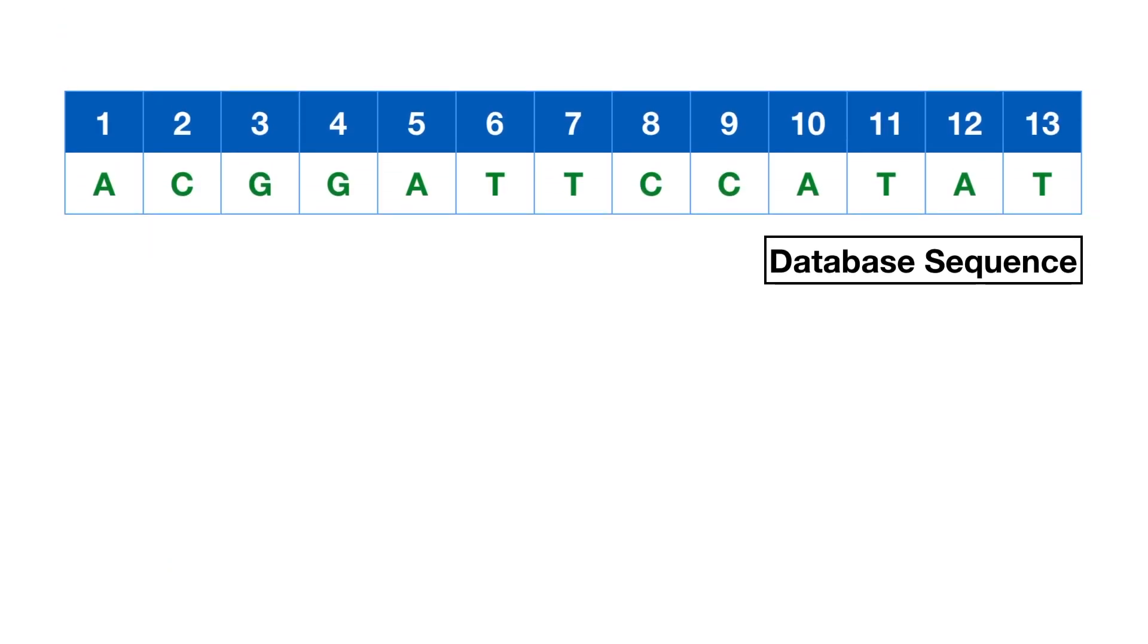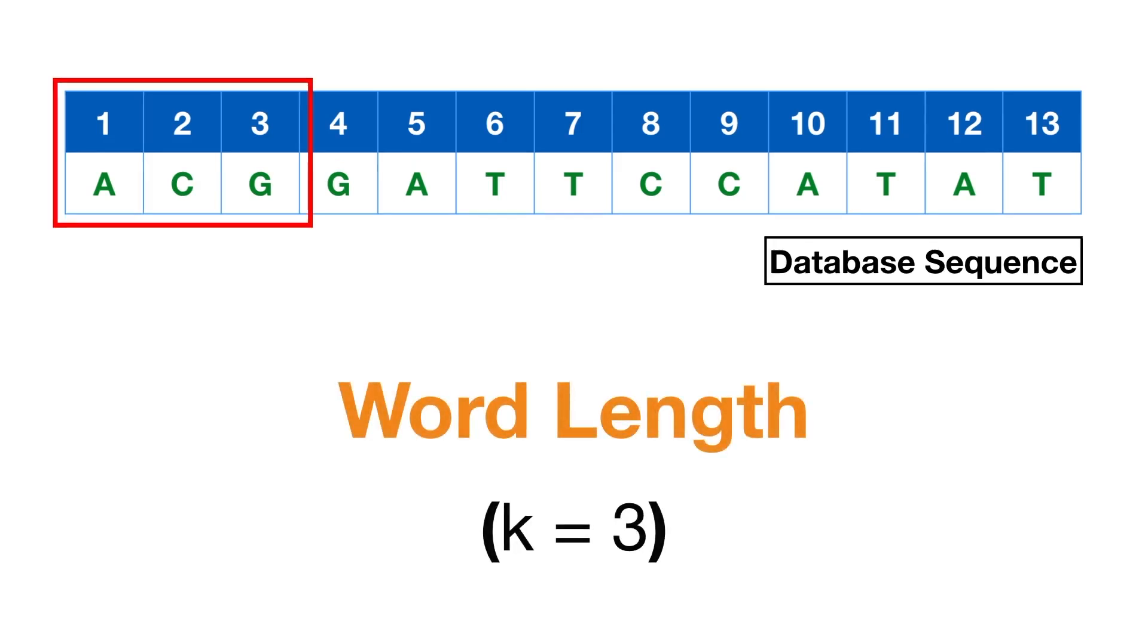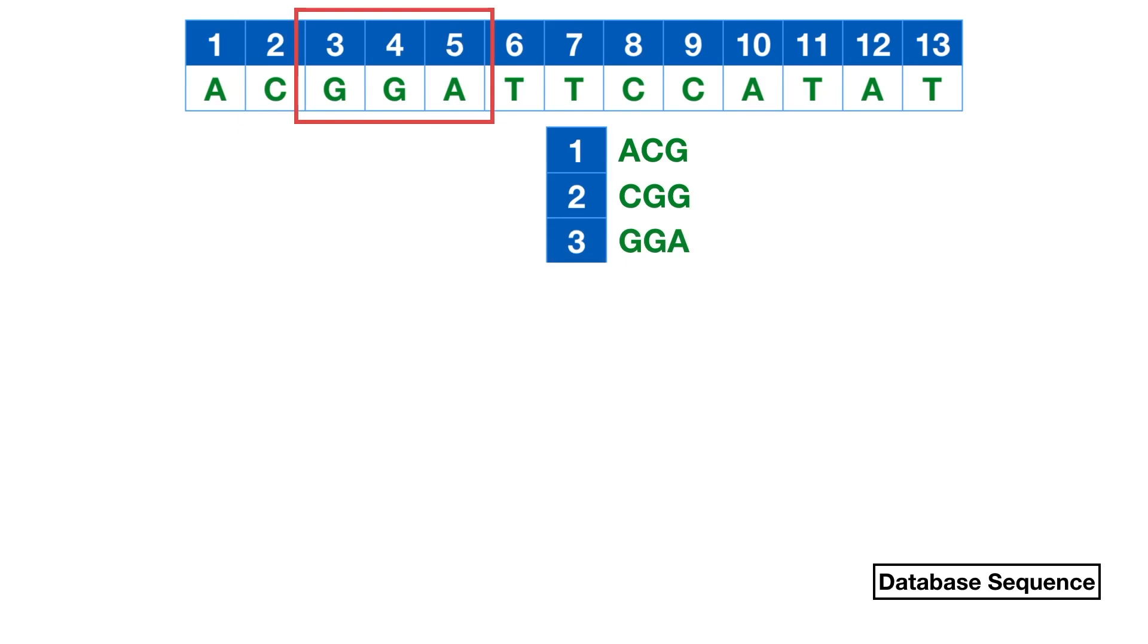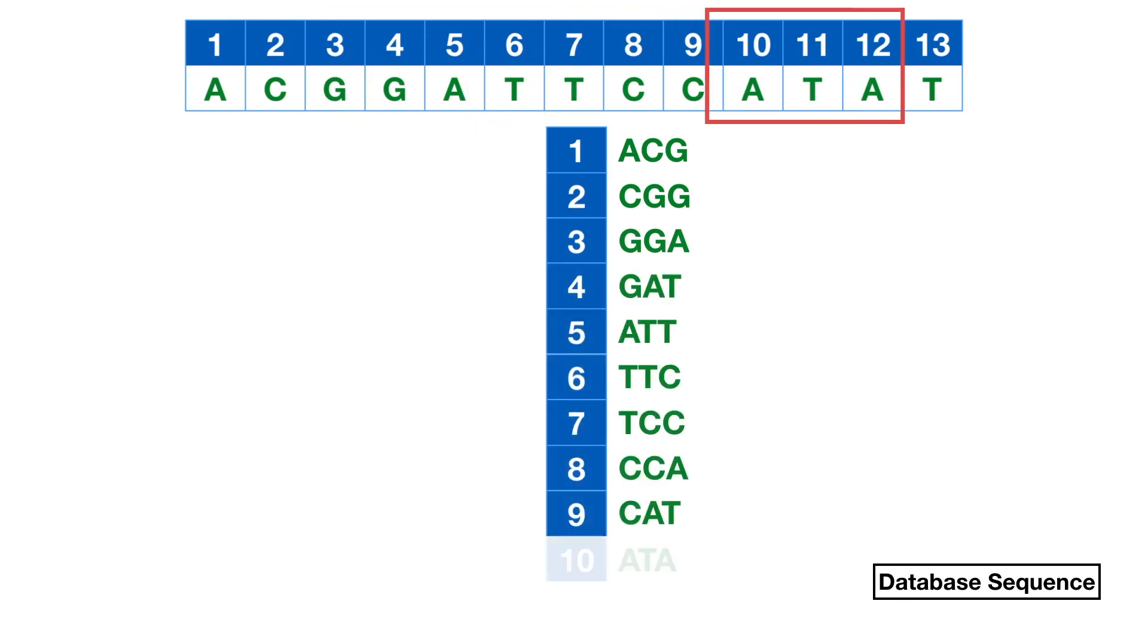The central technique used by BLAST and other fast aligners and mappers is called indexation. Indexation is a way of finding words in a dictionary. In this context, words are K-mers. A K-mer is a sequence segment of length K. In this illustration, we will use K-mers of length 3. In the first step of BLAST, all K-mers of the database sequence are indexed, as illustrated here.